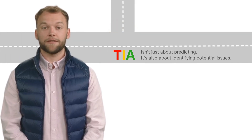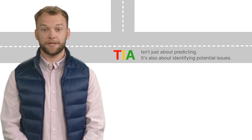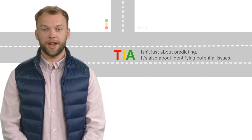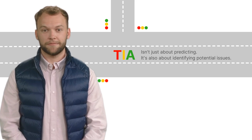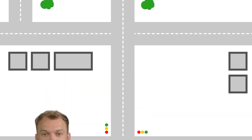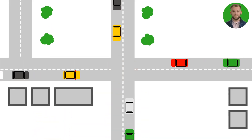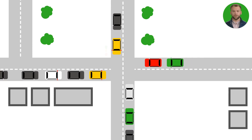And then? We implement solutions. An extra lane here, or a new traffic light there. Take this intersection, for instance. Our TIA revealed that a new traffic light would significantly improve traffic flow. And it did.